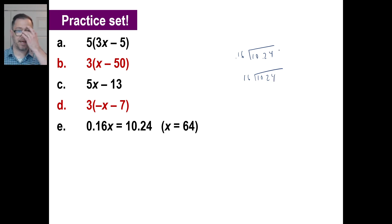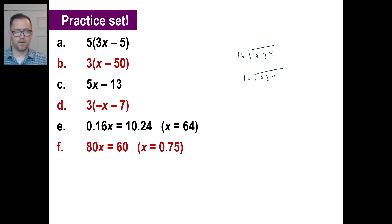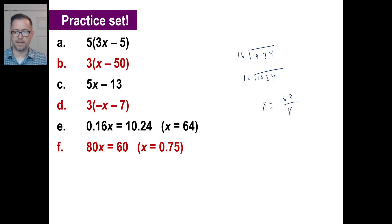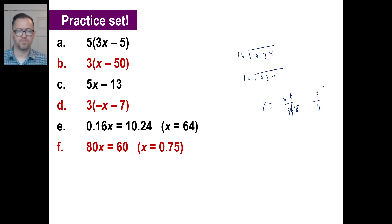Pause it and try F. There's the setup: 80 times a number equals 60. If you divide both sides by 80, you get X = 60/80. Get rid of the zeros — that's 6/8, or 3/4 if you reduce the fraction. Putting 3/4 as your answer is totally fine.